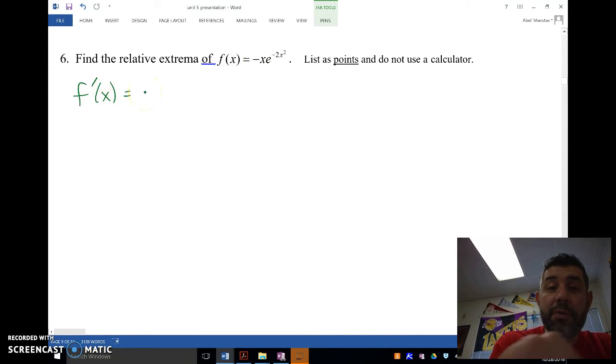This is a product rule because we have negative x times e to the negative 2x squared. So the product rule says we're going to take the first times the derivative of the second, now we need to do a chain rule, plus the second times the derivative of the first, negative one. And we're going to set that equal to zero.